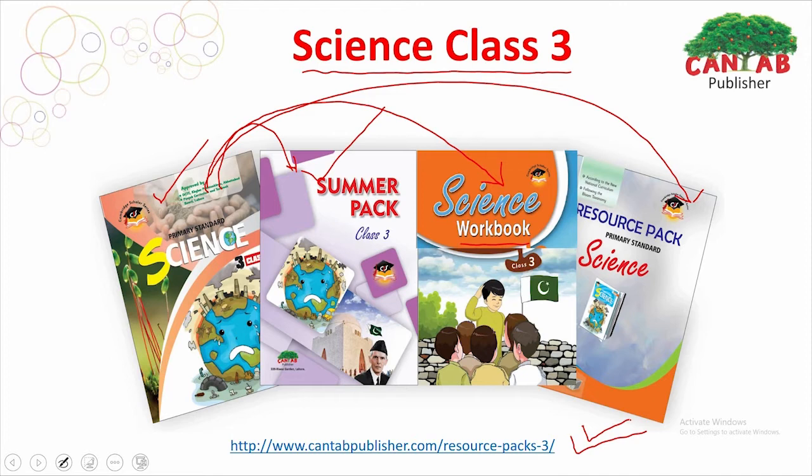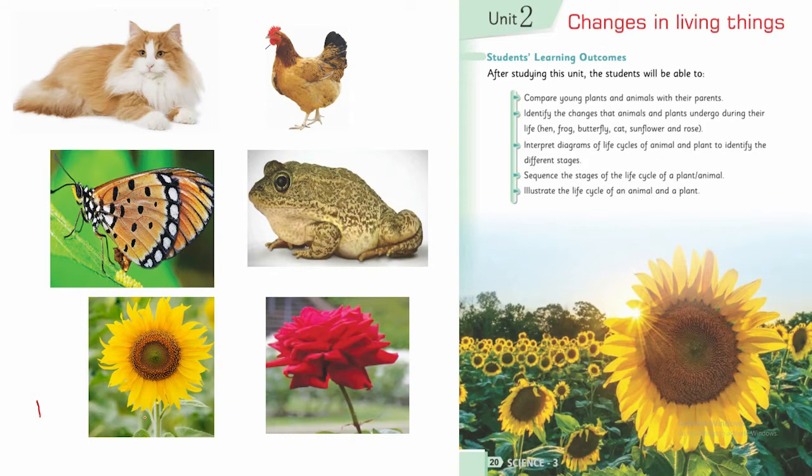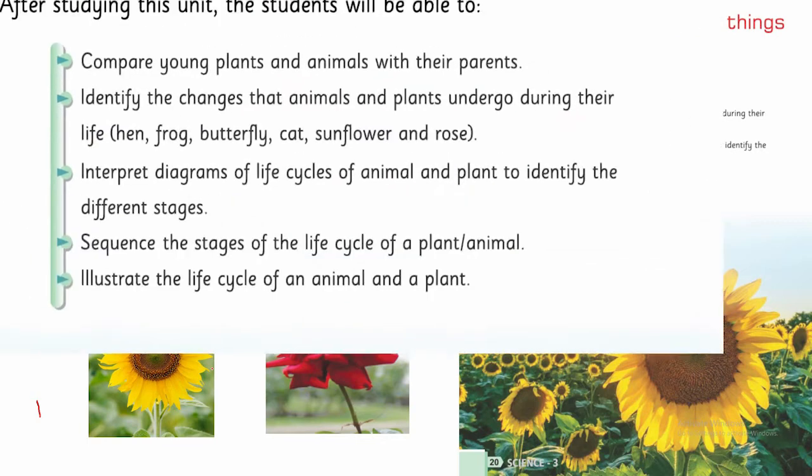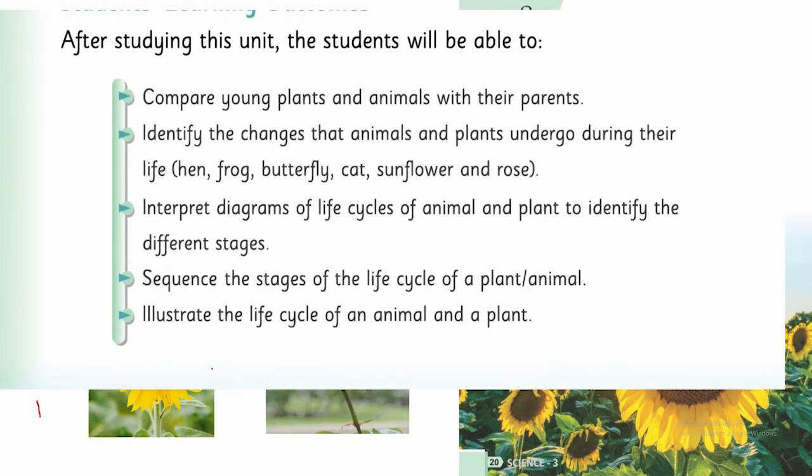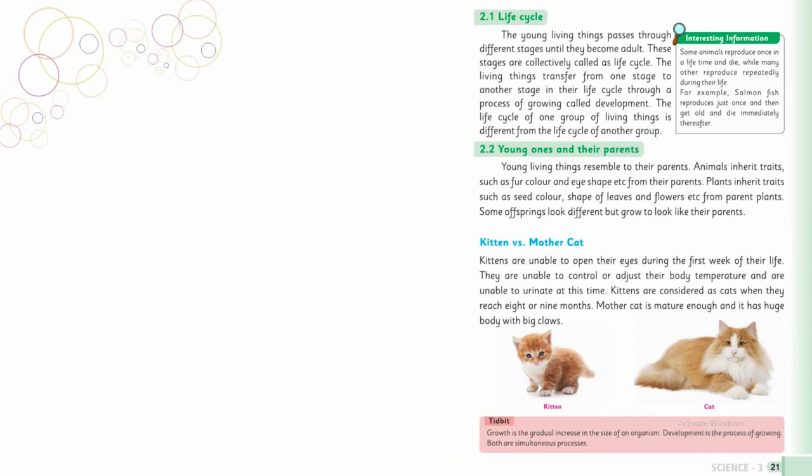We finished a chapter called 'Changes in Living Things,' where we learned about different characteristics of living things. These were the SLOs you already need to know about. First, we learned about life cycles, and after that, we studied young ones' resemblance with their parents.